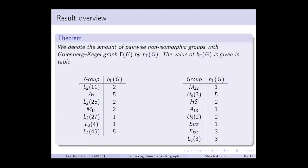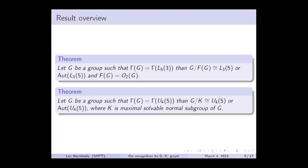The next part of the theorem is about almost recognizable groups. We denote the number of pairwise non-isomorphic groups with the same Gruenberg-Kegel graph as G by h_Γ(G), and you can see the values in the table. Note that there are fewer almost recognizable groups than unrecognizable groups from the groups with this small prime spectrum. As I said before, the result is still in progress, so there are cases that haven't been done yet. On the slide, you can see what we can say about the groups with Gruenberg-Kegel graph of U4(5) and L5(3) at the moment.